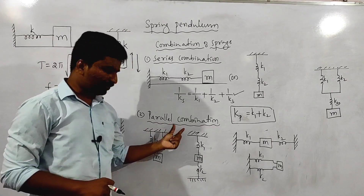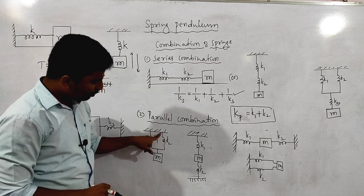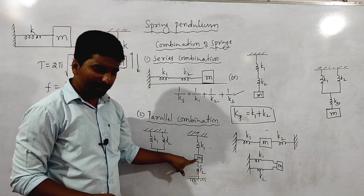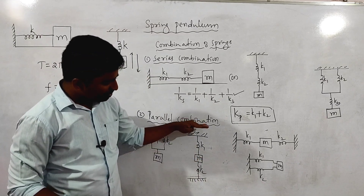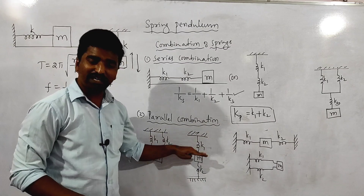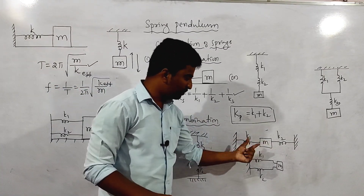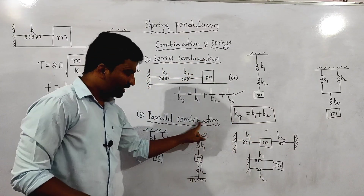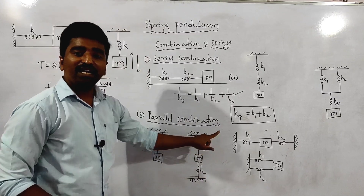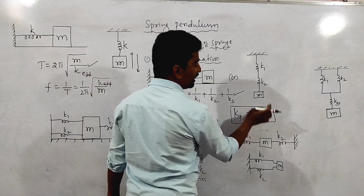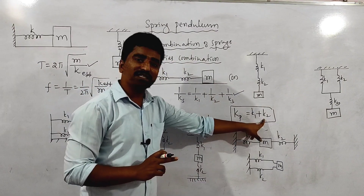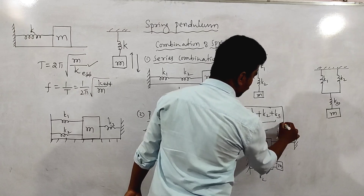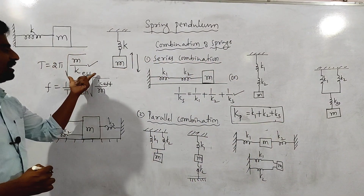For a parallel combination, both springs are connected at both ends with k1 and k2. The effective spring constant is k_p = k1 + k2. For three springs in parallel, k_p = k1 + k2 + k3. Substitute this value to get the time period.